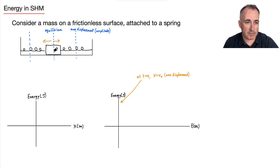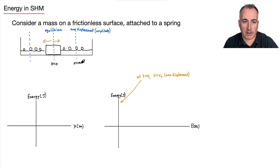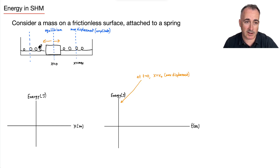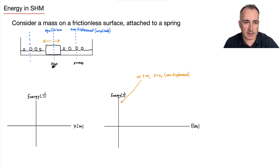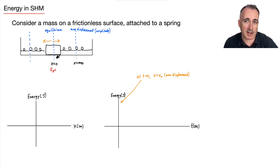At the equilibrium position we define x = 0, so x is our displacement from equilibrium. At maximum displacement we say x = x_max. At x = 0, the potential energy EP is zero, because PE is related to the displacement and spring constant — with no displacement, EP must be zero. At maximum displacement, the potential energy must be at a maximum.